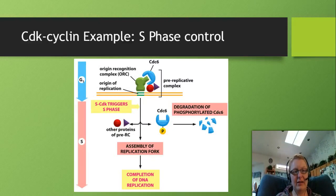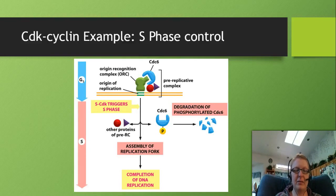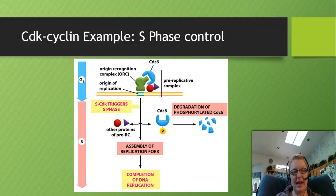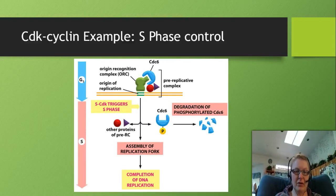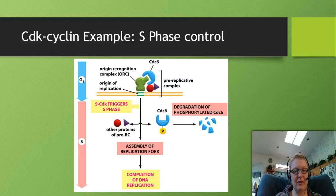Let's look at an example of how CDKs and cyclins work - entering S phase. We start at the origin of replication with the origin replication complex. A CDK called CDC6 sits on the origin of replication forming the pre-replicative complex, which helps recruit components but doesn't start replication yet. Once the S-CDK is activated, it triggers other proteins to disassemble CDC6, allowing the replication fork to assemble and DNA replication to complete. This shows how S-CDK is specific to that phase.